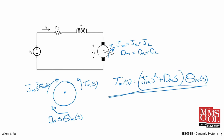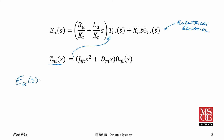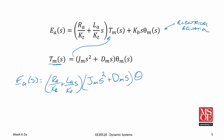We now have an equation that relates the torque to the angular displacement, which we can substitute into our electrical equation. Substituting the torque equation provides us with: E sub A of S equals the quantity R sub A over K sub T plus L sub A over K sub T times S, multiplied by J sub M times S squared plus D sub M times S, all times theta sub M of S, plus K sub B times S times theta sub M of S.